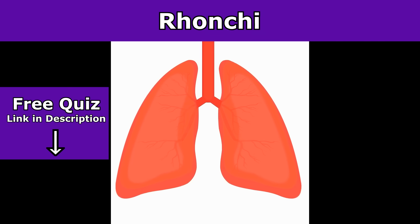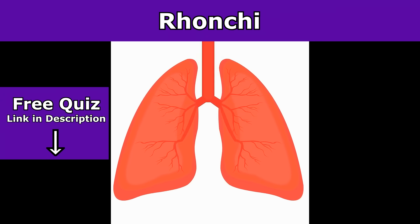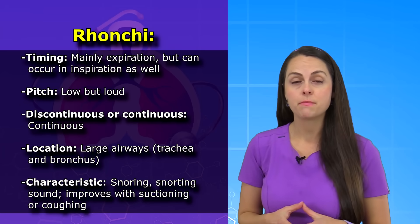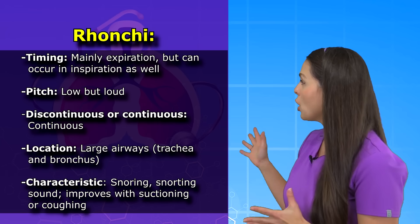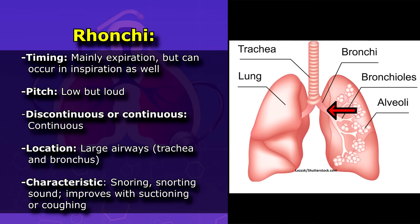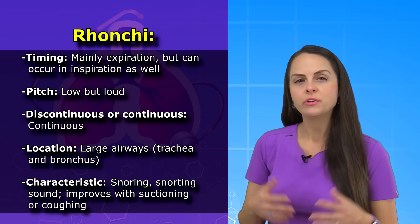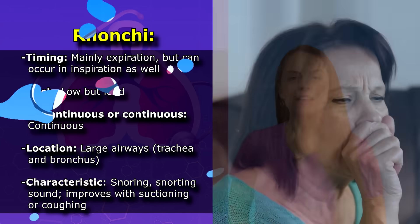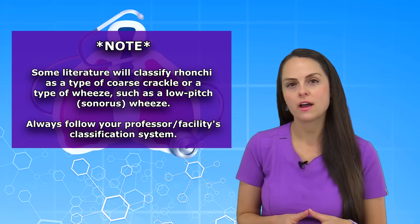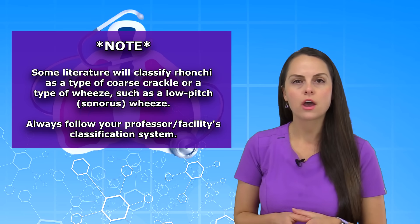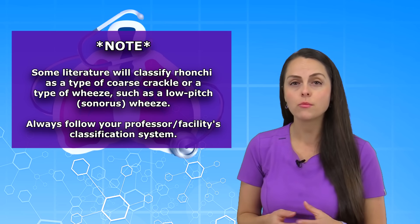Next is ronchi. How can you know that you're hearing ronchi? You want to pay attention to timing — ronchi are mainly heard on expiration, but you can hear them along with inspiration. They're going to have a low pitch and be loud. They're going to be continuous and located in large airways, like the trachea and the bronchus. They have a defining characteristic: the sound will sound like snoring or snorting, and it can decrease or go away with suctioning or coughing. Note that some literature classifies ronchi as a type of coarse crackle or a type of wheeze, so always go by your facility or professor's recommendations for how to categorize ronchi.